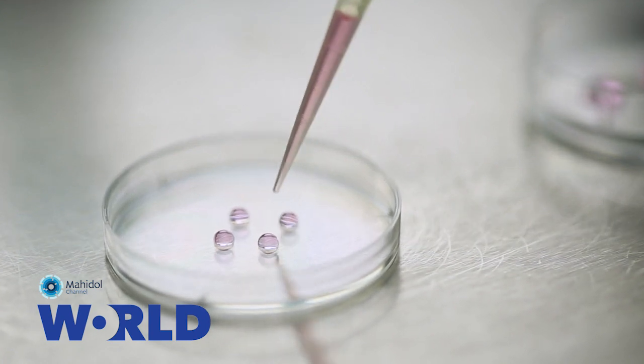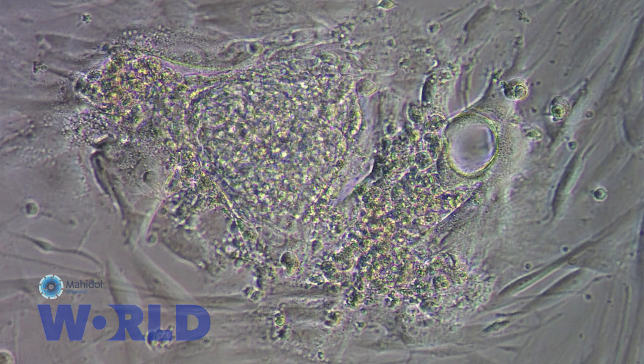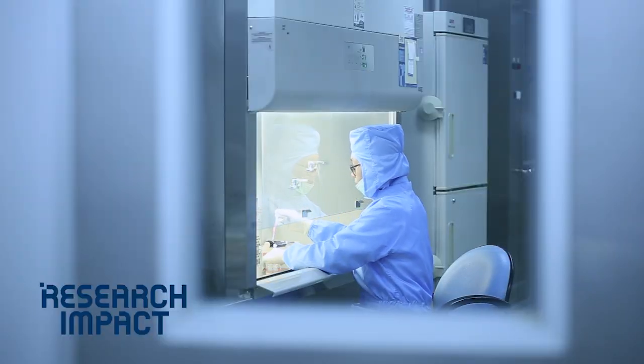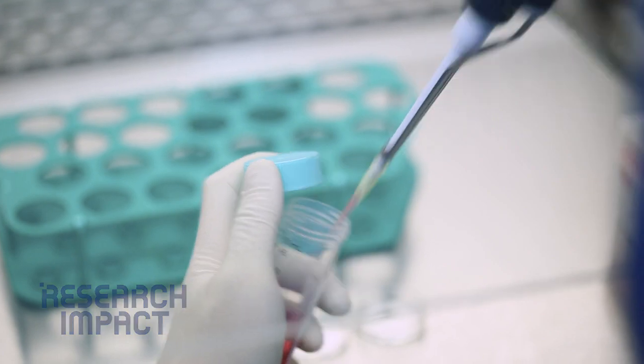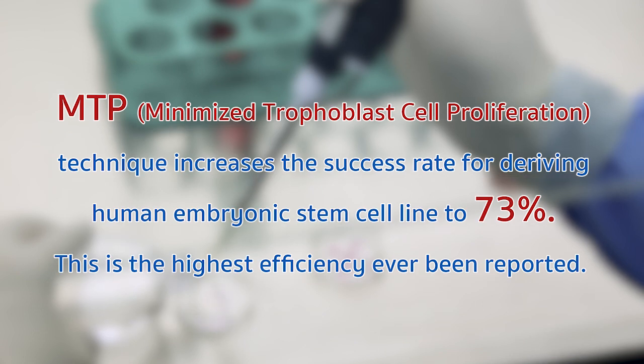This methodology is quite similar to the MID. We separate the ICM cells by MID technique. After that, we cultured them on the feeder-free system. During the first three days, we found that feeder-free system will prevent non-stem cell proliferation. That means non-stem cells start to die and only stem cells can form the outgrowth. And after we got the MTP technique, we tried different kinds of embryos, and we got stem cell lines from abnormal embryos with about 73% success rate.